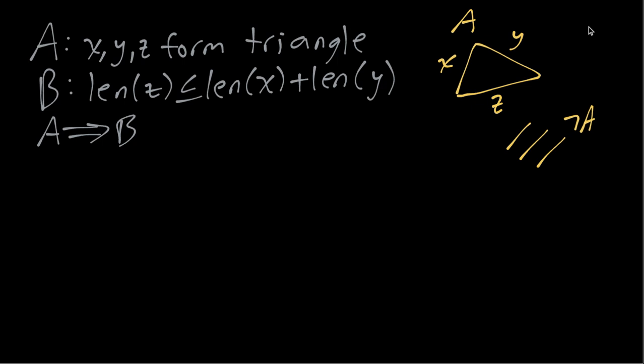And then B says that the length of Z is less than or equal to the sum of the lengths of X and Y. So in Euclidean geometry at least A implies B. This is called the triangle inequality.